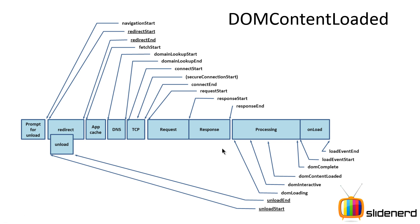Once your images are downloaded, your load event fires — that's the orange line, the second line, indicating that everything has been parsed and downloaded. This second diagram shows the different events in JavaScript. DOMContentLoaded fires first during the processing part, and ultimately when everything is loaded — all images, all scripts, all parsing done — the load event fires, which is the onload event happening after DOMContentLoaded.